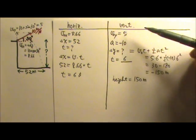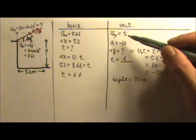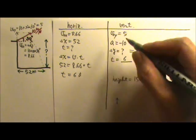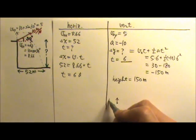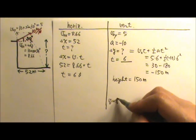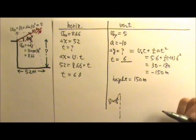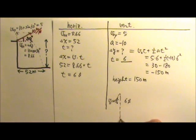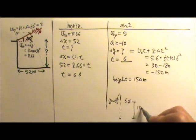As you can see, on the vertical side, the motion is exactly the same as an object that's shot straight up with a positive 5 initial velocity. It goes up and then down. Six seconds later, it reaches a position that is 150 meters below its starting height.